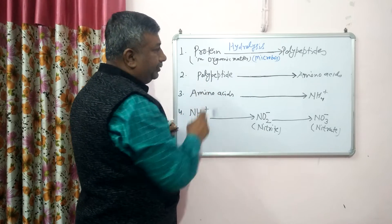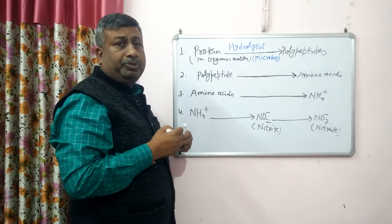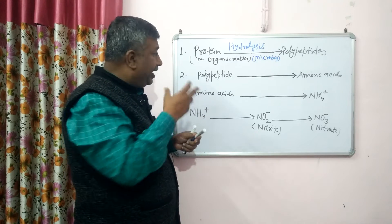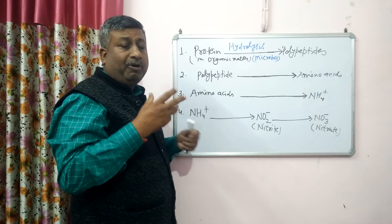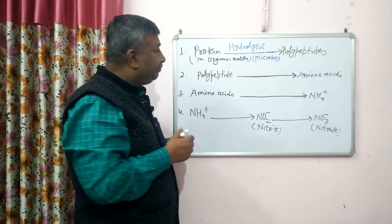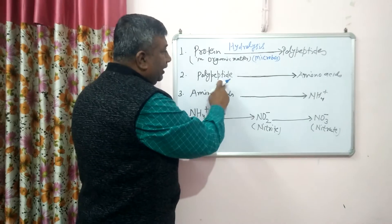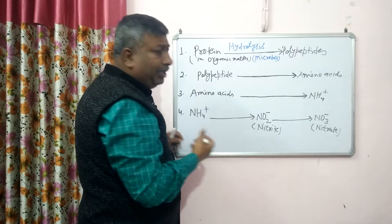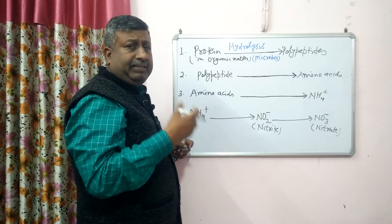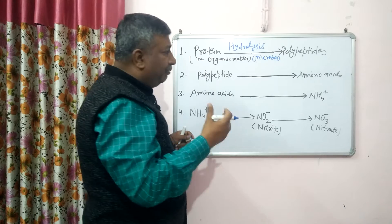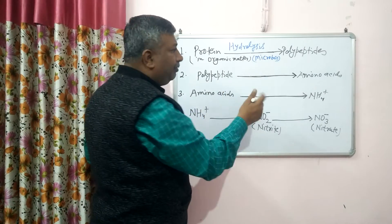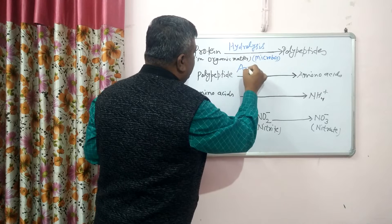The next step: polypeptides are composed of many amino acids. There are 20 amino acids which make polypeptides via peptide bonds. The peptide bonds in the polypeptides are broken, and amino acids are released. There are 20 types of amino acids — lysine, tryptophan, methionine, cysteine, and many others. This conversion of polypeptide into amino acids is called ammonization, and it also takes place in the presence of microbes.